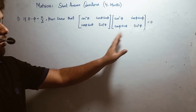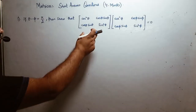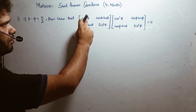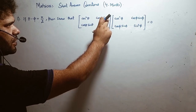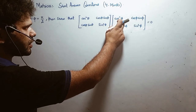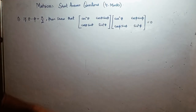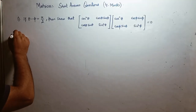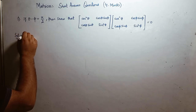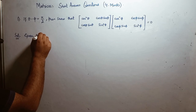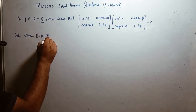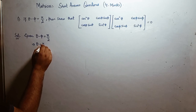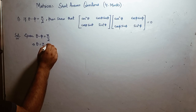We have to expand the left side and simplify it so that we get the answer 0. If you see the difference between the two matrices, in the first matrix the angle is theta in every member, while in the second matrix it is phi. So we will change theta in terms of phi to make it easier. Given: theta minus phi equals to pi by 2, which implies theta equals to pi by 2 plus phi.